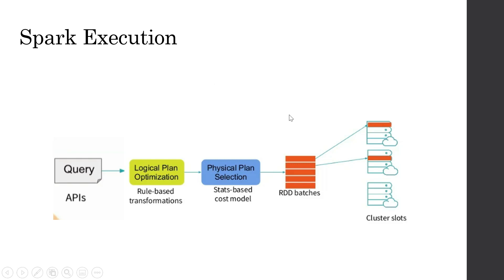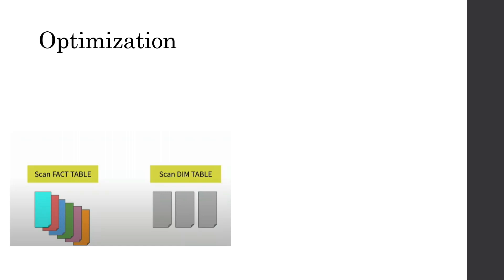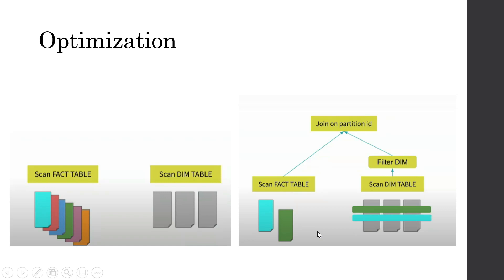Spark introduces dynamic partition pruning at the logical plan level. Let's take an example: assume we have a dimension table that is not partitioned, and a very big fact table that is partitioned — the different colors representing different partitions on the fact table. What we are trying to achieve is a filter on the dimension table. Out of all the partitions on the fact table, only two partitions are the ones we want to pick up based on the filter, such as city name equal to Delhi.